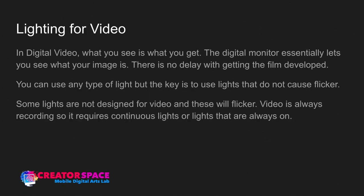In digital video, what you see is what you get. The digital monitor on the camera lets you see exactly what your image is — there isn't much guesswork. That's the great advantage of digital cinema versus film, where you don't know what it looks like until it's developed. You can use any type of light, though some lights can flicker — normal fluorescent bulbs tend to flicker. Most LED lights don't flicker, and household LED bulbs are very reasonable.